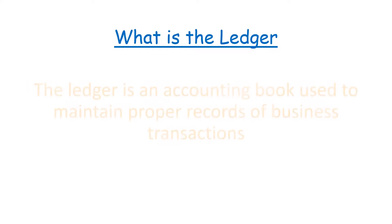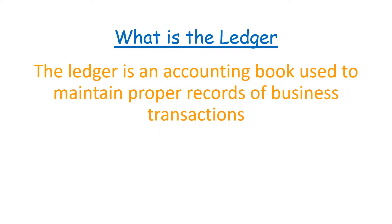So there are basically three kinds of ledgers. We have what we call the general ledger, then we have what we call the sales ledger — or call it the receivables ledger — and then also we have what we call the purchases ledger, or the payables ledger. The ledger is an accounting book used to maintain proper records of business transactions.